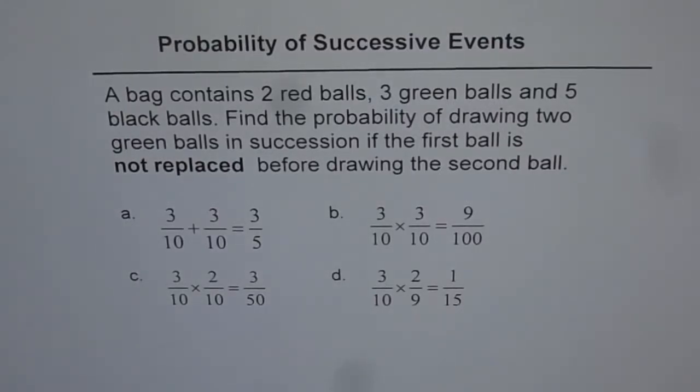Probability of successive events. A bag contains two red balls, three green balls and five black balls. Find the probability of drawing two green balls in succession if the first ball is not replaced before drawing the second ball.